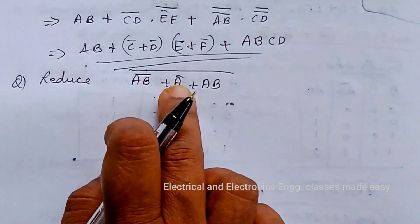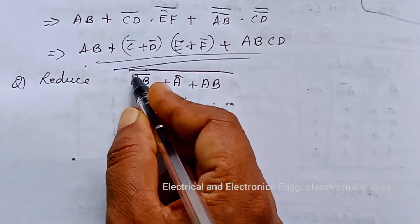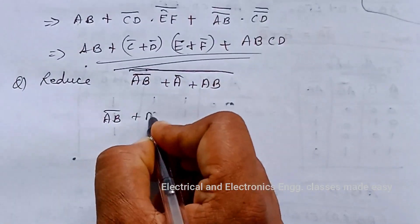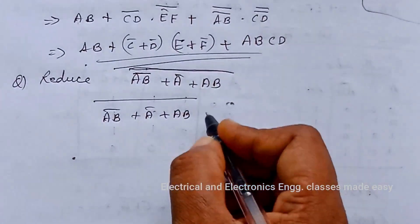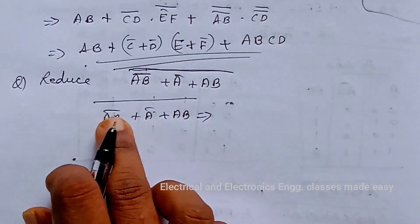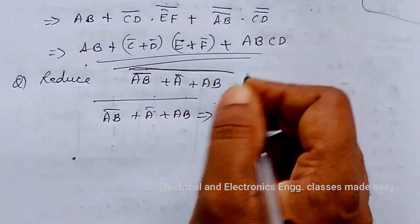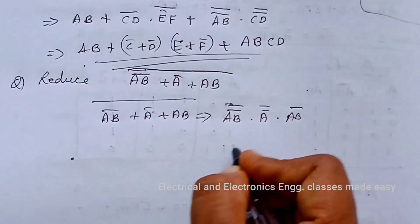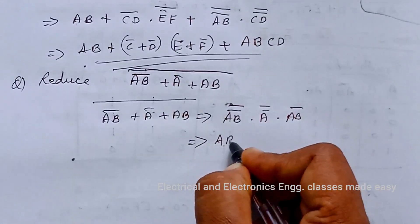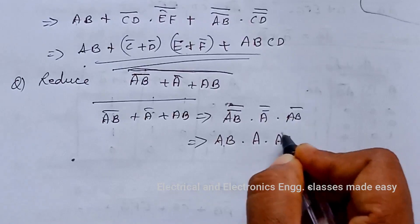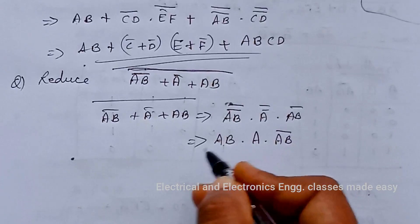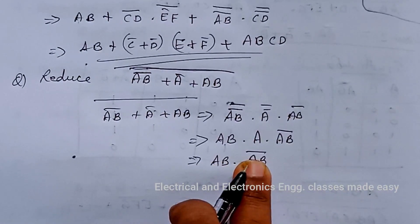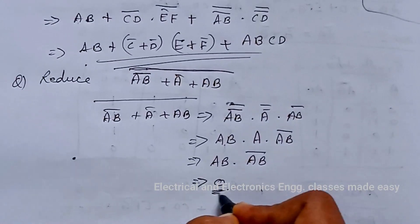Let us do another example: simplify AB bar plus A bar plus AB, the whole bar. The given expression is AB bar plus A bar plus AB, whole bar. First, DeMorganize: this is of the form A plus B plus C whole bar, which equals A bar dot B bar dot C bar. That gives: AB bar bar dot A bar bar dot AB bar. AB double bar is AB, dot A dot AB bar. Then A dot A dot A is A, and A dot A bar is 0, so we get 0 as the answer.